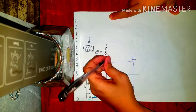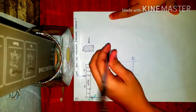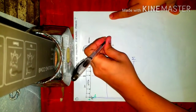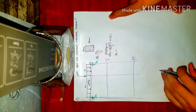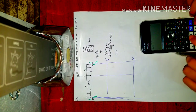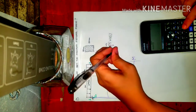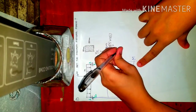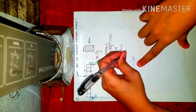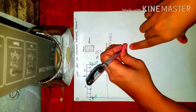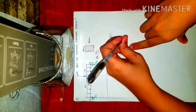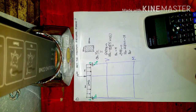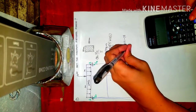Taking the summation of moments at B equals zero: 3·Ra = 6 × 3 × (3/2) + 15 × 1. So Ra = (6 × 3² / 2 + 15) / 3, which gives Ra = 14 kN. Then taking the summation of vertical forces: Rb = 6 × 3 + 15 − 14 = 19 kN.